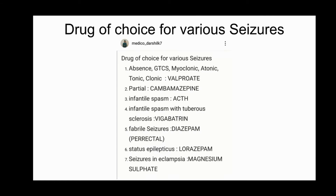The second focus of this video is the drug of choice for various seizures. This image is also available on my Instagram. For absence seizures, generalized tonic-clonic seizures (GTCS), myoclonic, atonic, tonic, or clonic seizures, the drug used is valproate.